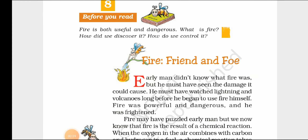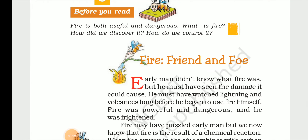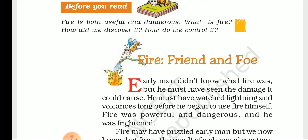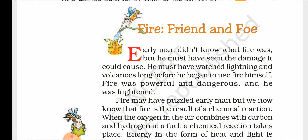So dear students, we understood the difficult words and now we will move to the chapter Fire Friend and Foe. Whether fire is a friend or foe depends on the time and situation. Fire may be useful for us, or sometimes it becomes a curse when it becomes a blaze — out of control. At that time fire is our foe, our enemy. If we have control over fire and use it gently, it becomes our friend.